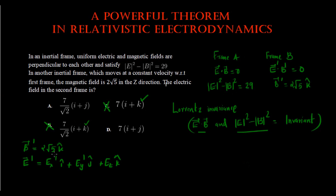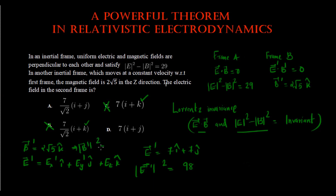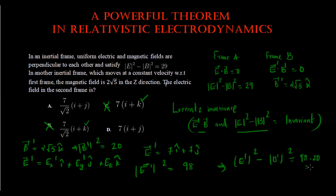Now using the second invariant: E squared minus B squared equals 29. Let's take option D, assuming E prime to be 7i plus 7j. The modulus squared of E prime is 98. The modulus squared of B prime is 20. So E prime squared minus B prime squared is 98 minus 20, which equals 78 — not equal to 29.